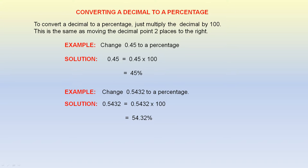Converting a decimal to a percentage. To convert a decimal to a percentage, multiply the decimal by 100. This is the same as moving the decimal point two places to the right. Example: change 0.45 to a percentage. 0.45 times 100 gives you 45%.